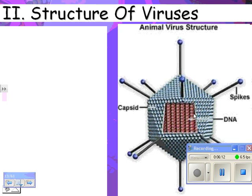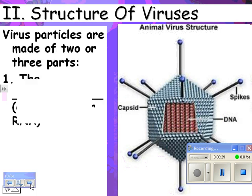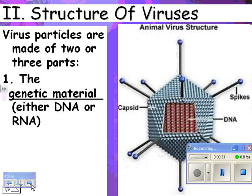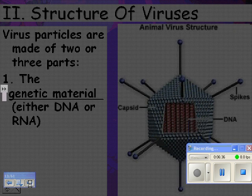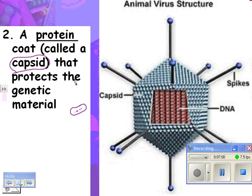Structure of a virus: a virus has either DNA or RNA — some type of genetic material — and then a protein coat on the outside. Sometimes there's another layer, but they can be as simple as genetic material with a protein around it. This protein coat is called a capsid, like a capsule pill where the medicine is inside and the capsule is on the outside. The capsid is a protein coat that protects the genetic material.